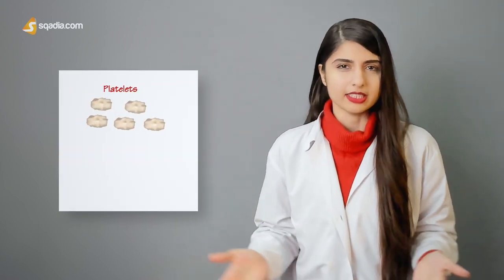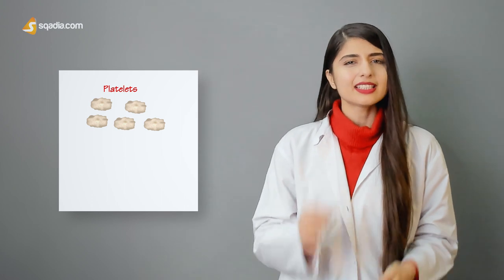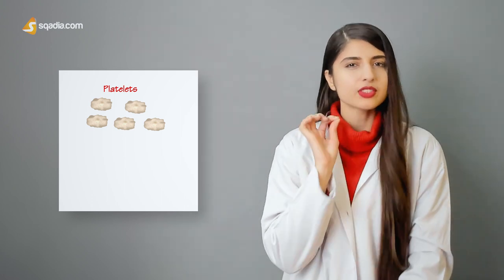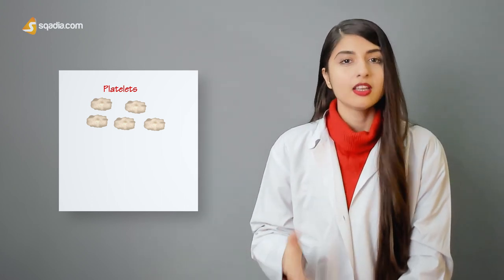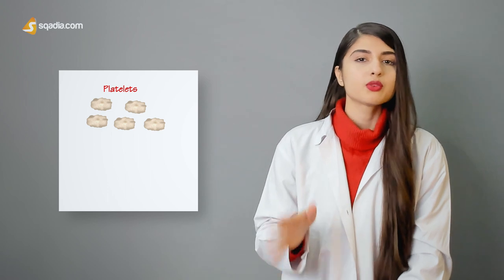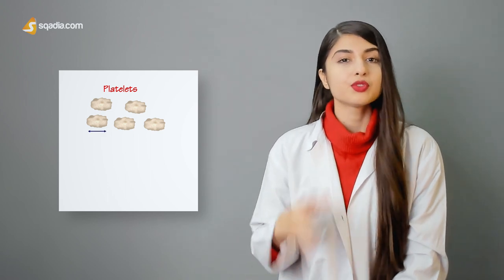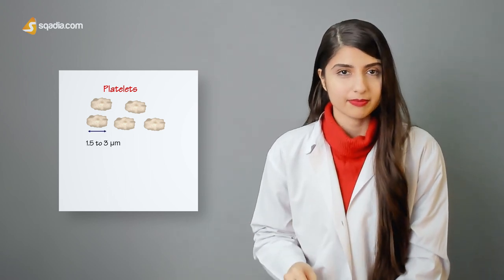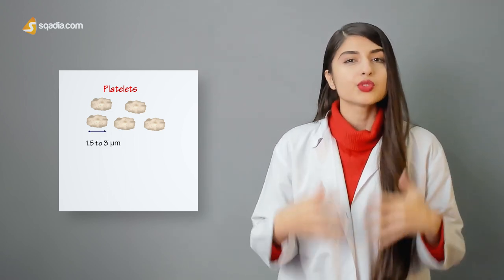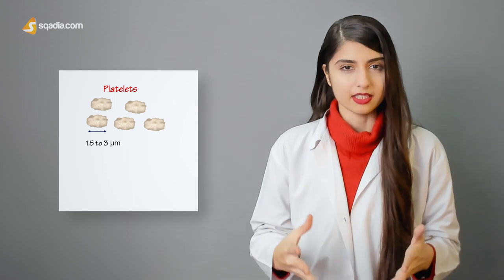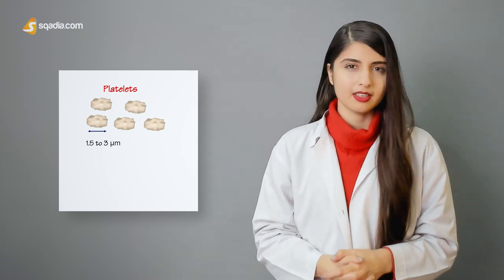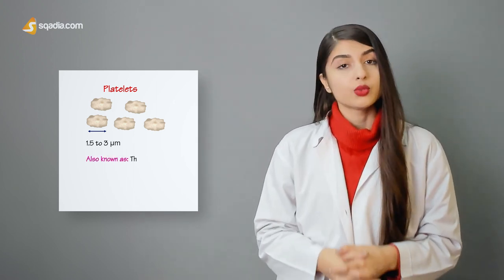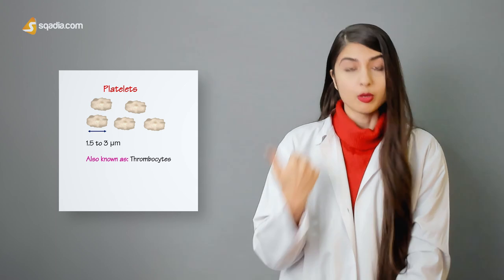Let's recall what platelets are. Platelets are very small, non-nucleated blood cells, almost 1.5 to 3 micrometers in size. They function to stop bleeding by sticking together to form a clot. They are also known as thrombocytes.